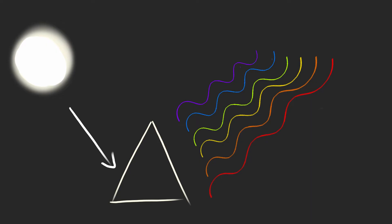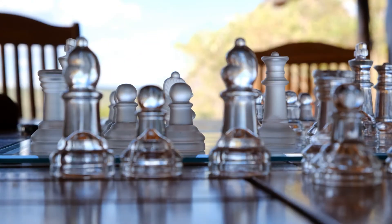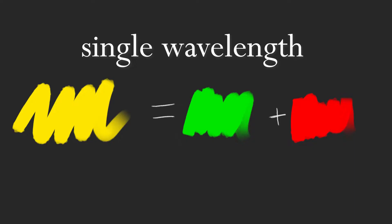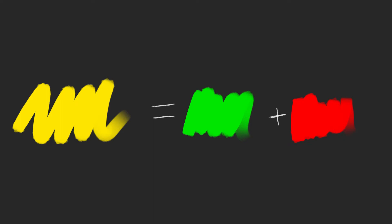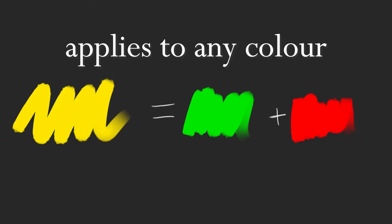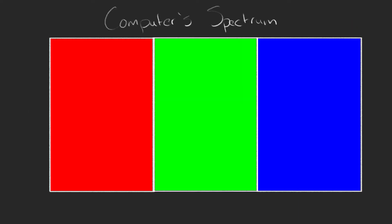Remember how we said that different wavelengths correspond to different colours? Here's the trick computers use: our brains can't tell the difference between a single wavelength corresponding to yellow, or two different wavelengths corresponding to green and red which, when combined, make up yellow. This applies to any colour. So a computer's colour spectrum doesn't look like ours — it actually looks like this. The computer only sees red, green and blue.